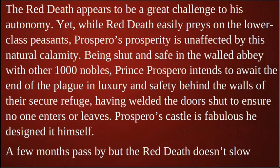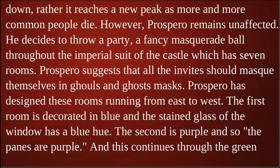The Red Death appears to be a great challenge to his autonomy. Yet while Red Death easily preys on the lower-class peasants, Prospero's prosperity remains unaffected by this natural calamity. Being shut and safe in the walled abbey with a thousand other nobles, Prince Prospero intends to await the end of the plague in luxury and safety, having welded the doors shut to ensure no one enters or leaves. A few months pass, but the Red Death doesn't slow down — it reaches new peaks as more and more common people die. However, Prospero remains unaffected.